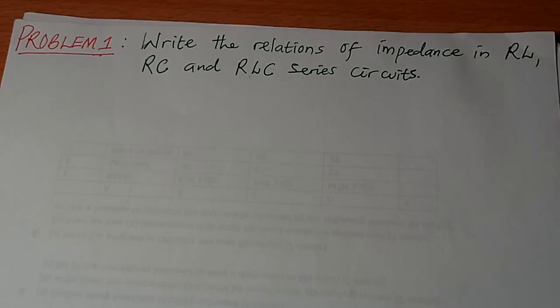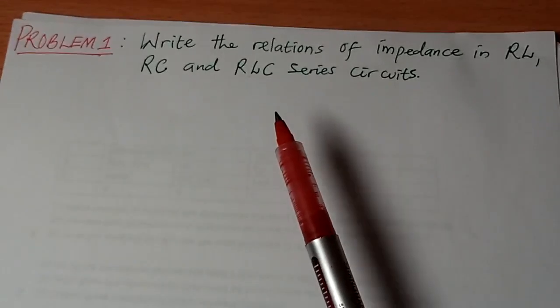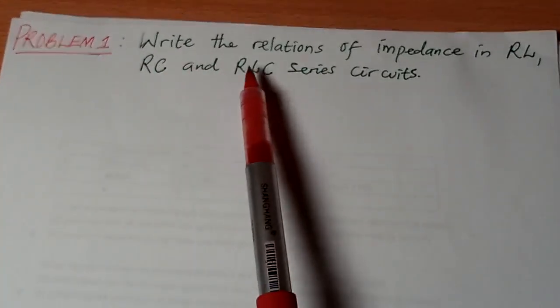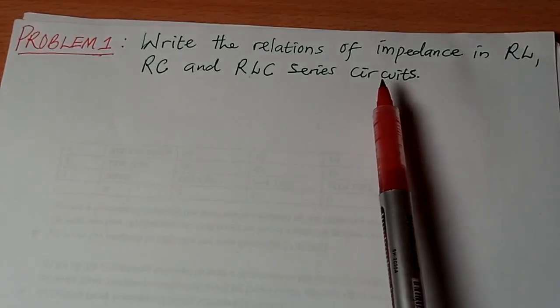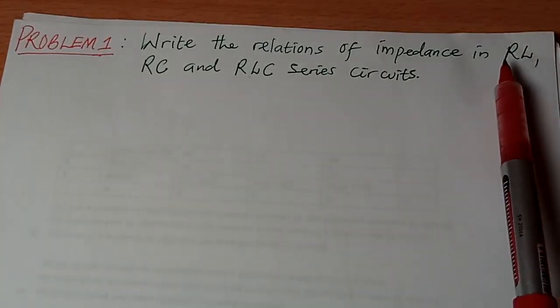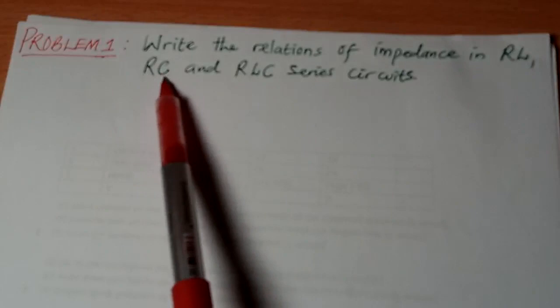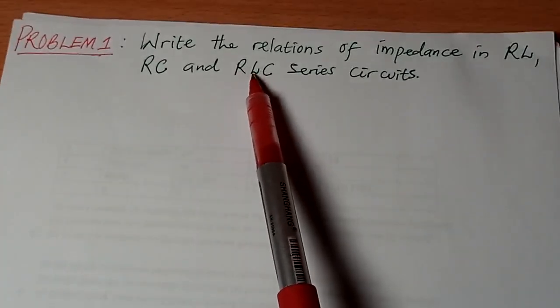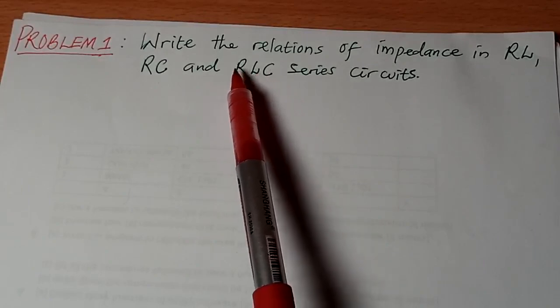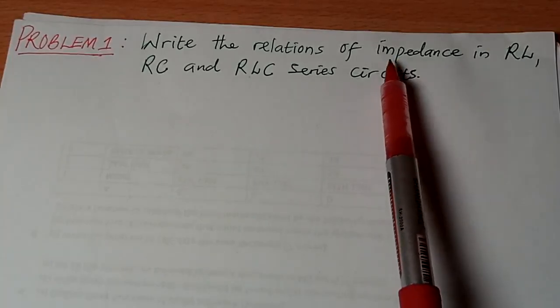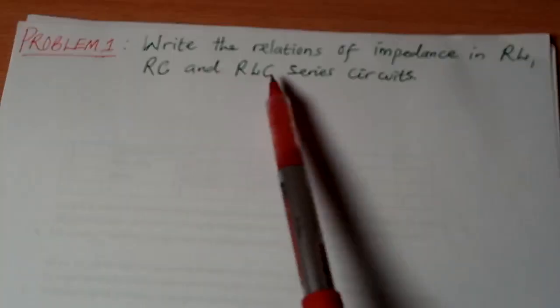The problem as written here as problem one, it's read: write the relations of impedance, meaning the formula for calculating impedance in RL, RC and RLC series circuit. It means that if you have an AC circuit where you have a resistor and inductor only or a resistor and capacitor only or a resistor and inductor and a capacitor, all the three of them connected in series circuit. What will be the formula for calculating impedance for each of the three circuits?